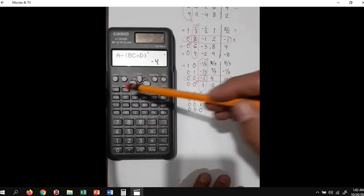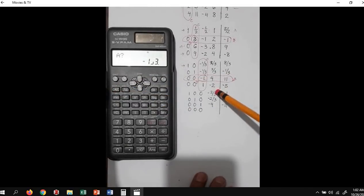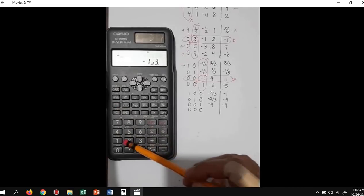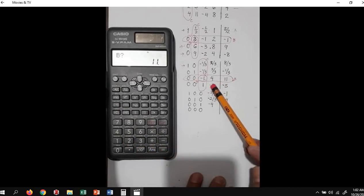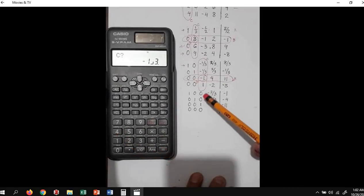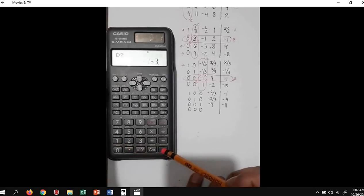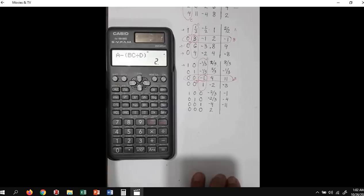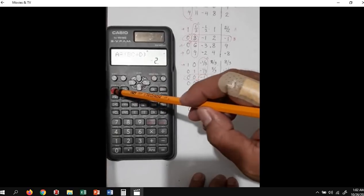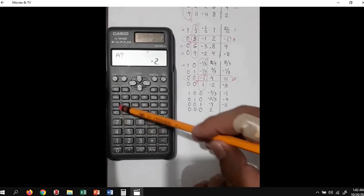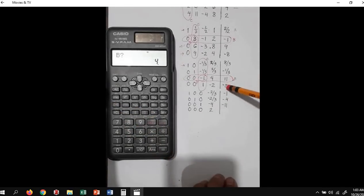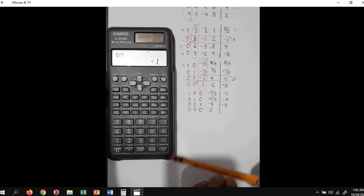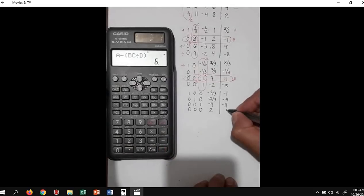We're almost finished. Calc again. A is negative 2, B is 4, C is 1, D is negative 1. We have 2. And calc again: A is negative 5. B is 11. C is 1. D is negative 1. We have the value of 6.